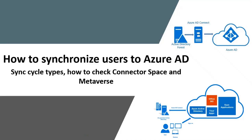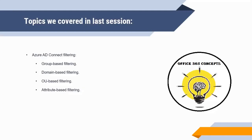Hi guys and welcome to the seventh video of this series where we are discussing Azure AD Connect concepts. In the last video, we discussed the different types of filtering that can be configured within Azure AD Connect — group-based filtering, OU-based filtering, domain-based filtering, and attribute-based filtering. I showed you practically how to configure each type of filtering.